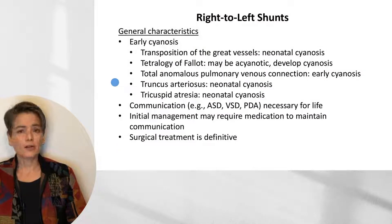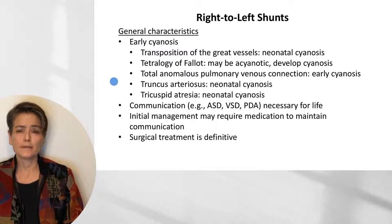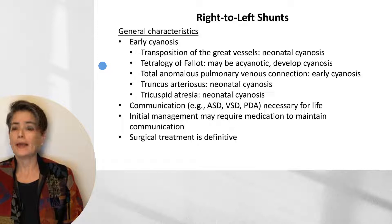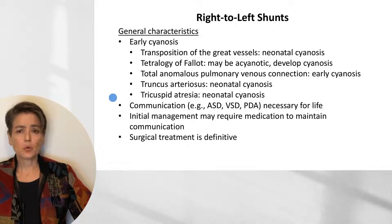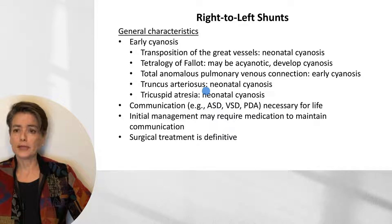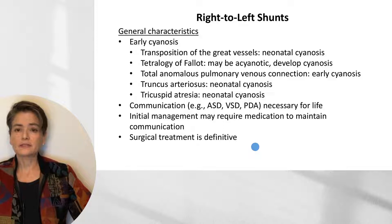The right-to-left shunts are characterized by early cyanosis. The mnemonic is that these are the five T's, but I'm going to go into more detail than what is covered in Robbins Basic Pathology, because I don't want you to simply look at these as a mnemonic — I want you to actually understand the pathophysiology. All of them are characterized by early cyanosis, with one possible exception being tetralogy of Fallot, in which the neonate may be acyanotic with subsequent development of cyanosis. All of these will require some sort of communication between the pulmonary and systemic circulations to maintain life — an atrial septal defect, ventricular septal defect, or patent ductus arteriosus. Initial management may include a prostaglandin to maintain the patent ductus arteriosus, while surgical treatment is definitive.